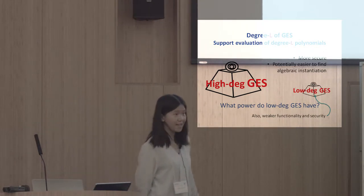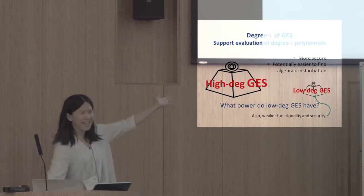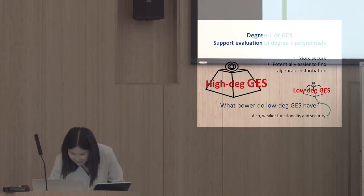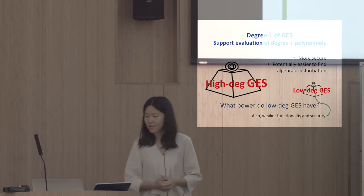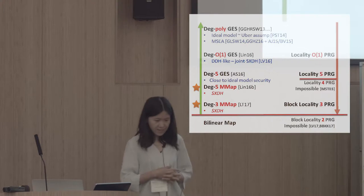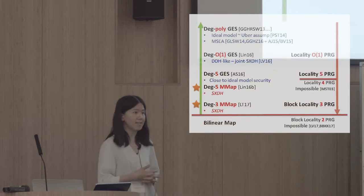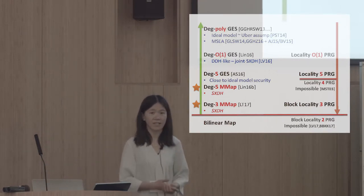Here is a brief history of IO construction through the lens of degree. The first-generation constructions all depend on polynomial-degree evaluation. Security is usually analyzed in the ideal model or based on Uber assumptions, with one exception that formulated a simpler assumption called multilinear subgroup elimination. In 2016, two works showed that to build IO it suffices to have constant-degree graded encodings.